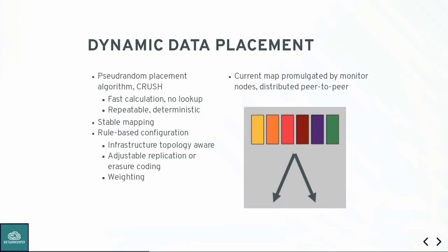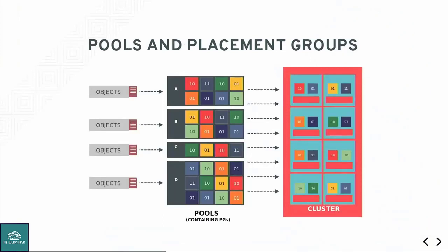When the topology changes — a failure or you add storage — these rules are recalculated, and the data moves to where the hash function says it belongs. If you make a request based on an outdated CRUSH map, the receiving node will either serve the data or tell you the data has moved and provide the latest map. Or you can ask the monitor, which always has an authoritative copy. Our hash buckets, instead of being the OSDs themselves, are what are called placement groups, so our hash function works more efficiently. With placement groups, things actually work even if you have like a three-node cluster — think of placement groups as hash buckets round-robined on top of the cluster.